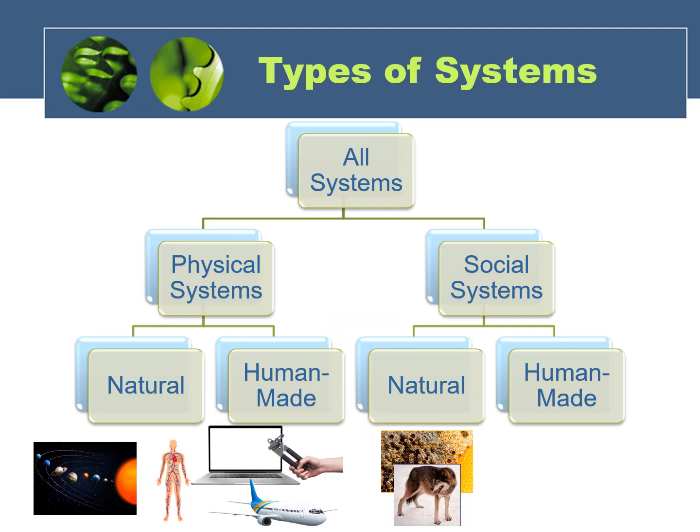Try to come up with a couple more examples yourself. For human-made social systems, you still have living creatures interacting and working together, except this time, as the name suggests, the living creatures are humans.